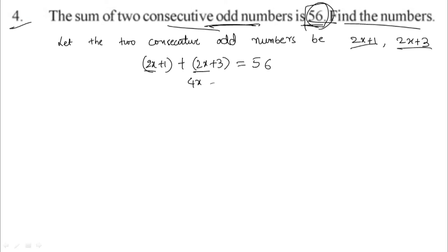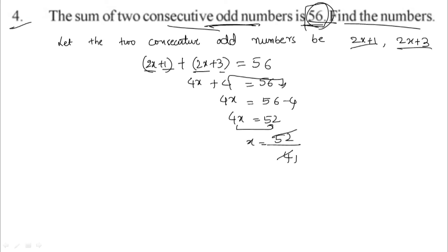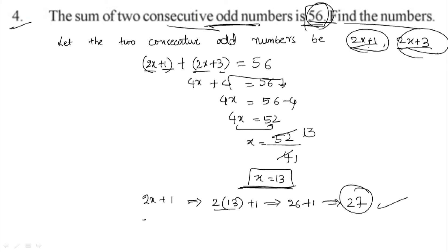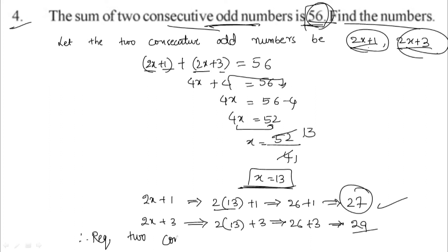Simplifying: 4x plus 4 equals 56, so 4x equals 56 minus 4, giving 4x equals 52. Therefore x equals 52 by 4, which equals 13. The first number is 2x plus 1 equals 2 times 13 plus 1 equals 26 plus 1 equals 27. The second number is 2x plus 3 equals 2 times 13 plus 3 equals 26 plus 3 equals 29.